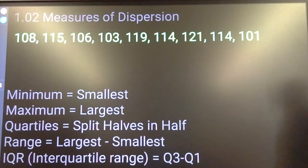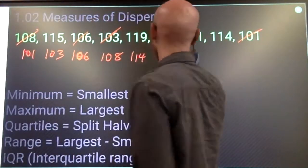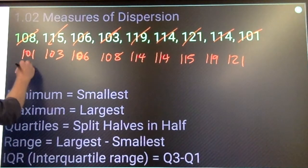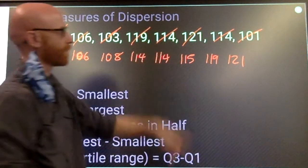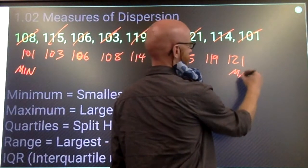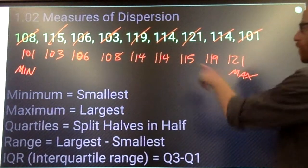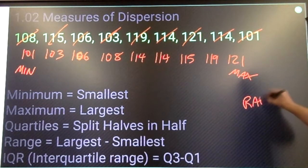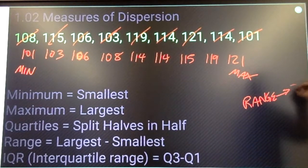Another example. So, again, minimum 101, maximum 121, range is 121 minus 101, so the range is 20.